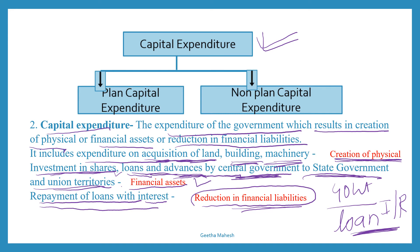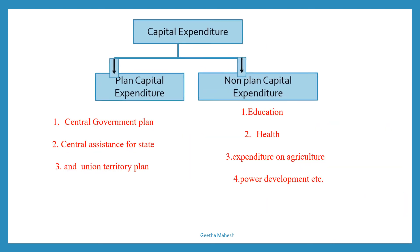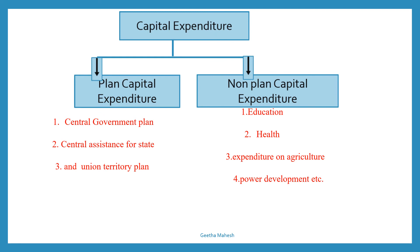When you take a loan, it becomes a liability. In the future, the government needs to repay this loan along with interest. When it does repay the loan along with interest, we call this a reduction in financial liabilities of the government. Capital expenditure has two types: one is plan capital expenditure, and another is non-plan capital expenditure.